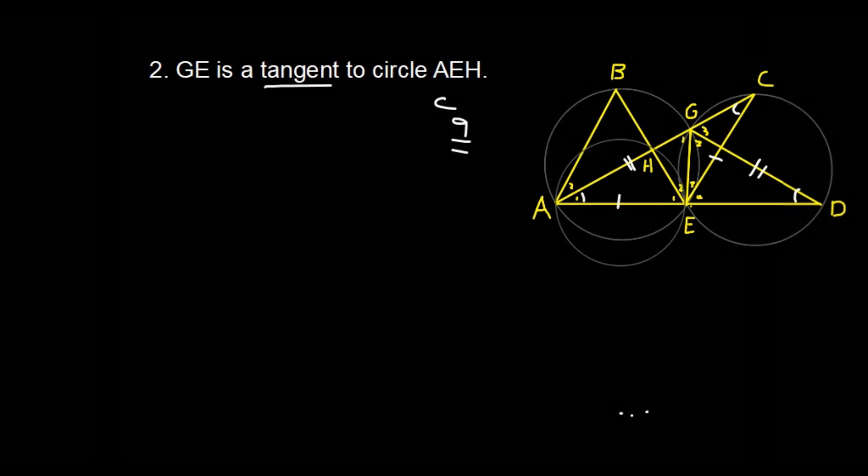Then, I would just like to take a second to draw the circle that they mentioned we need. A little faster than a second there. Okay. So we are working with the circle that passes through points A, E, and H. And there, in super crazy skills, I drew the circle.